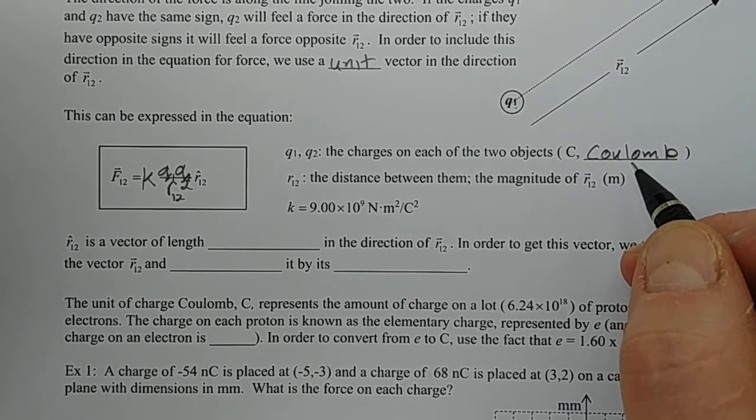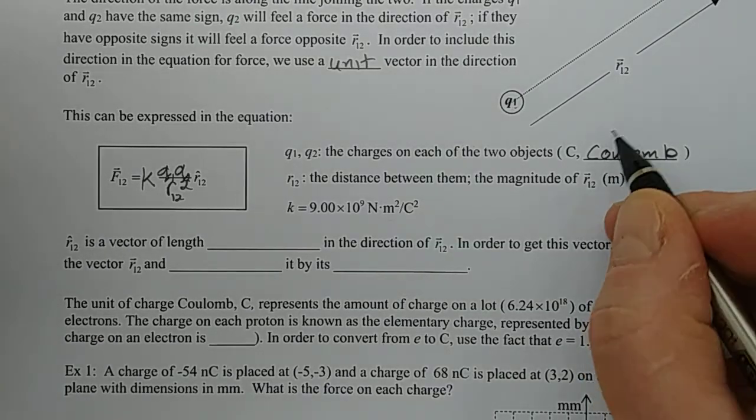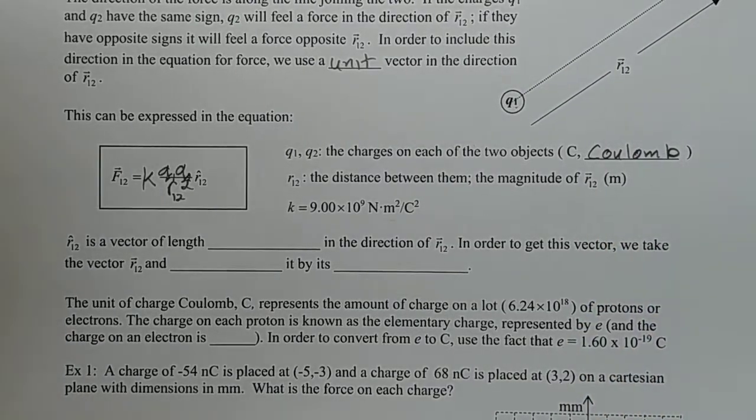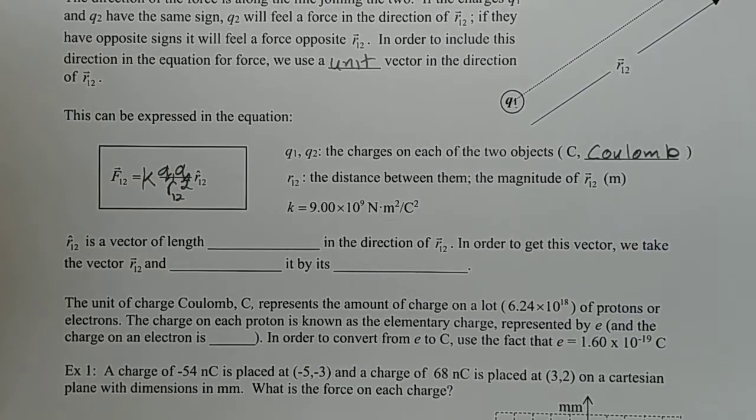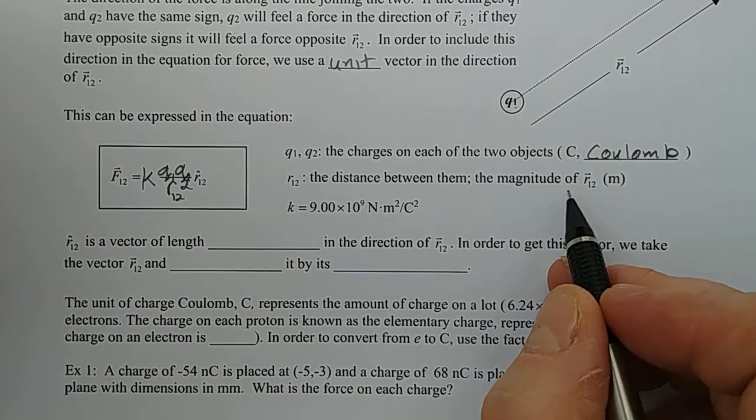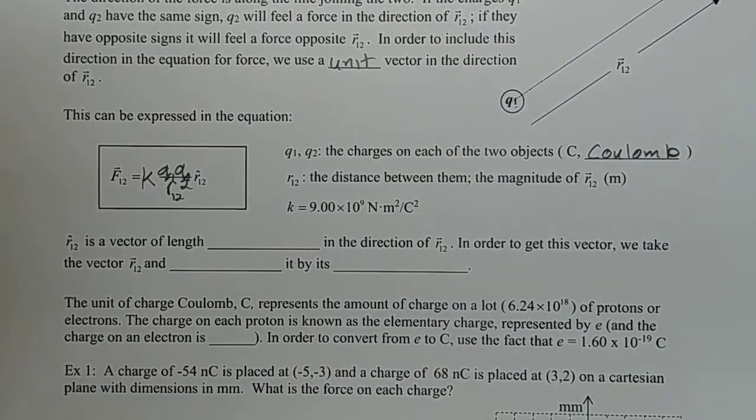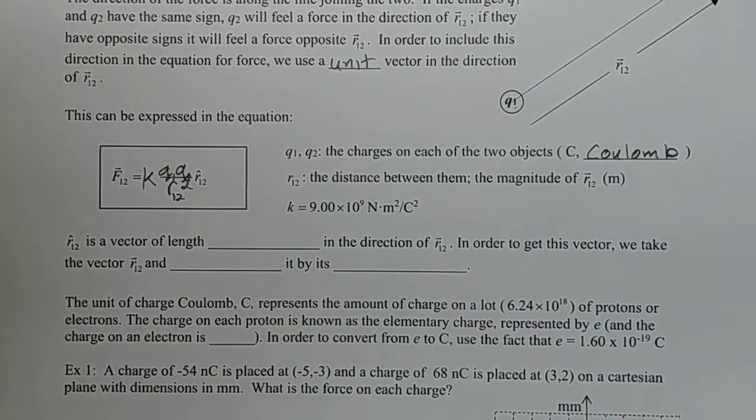In circuits, we keep track of how much charge is flowing each second. R12 is the distance between them. It's the magnitude of the relative position vector R12. And K is this constant for our universe.